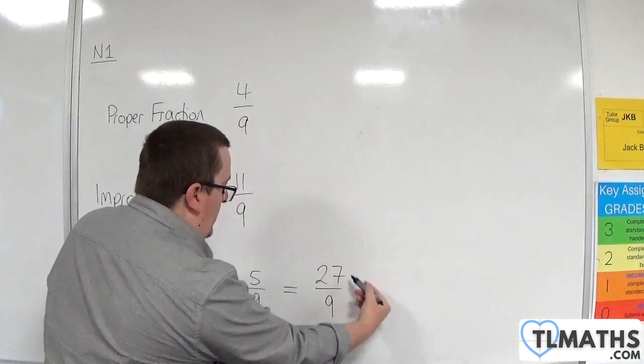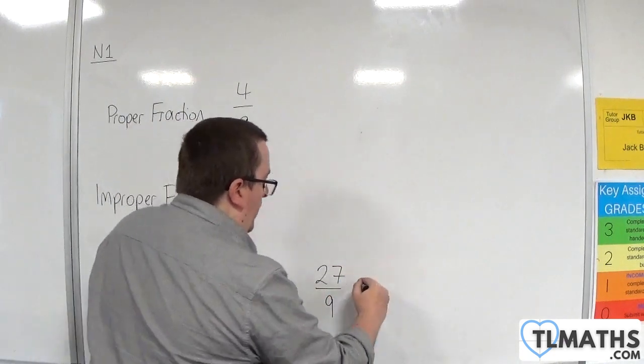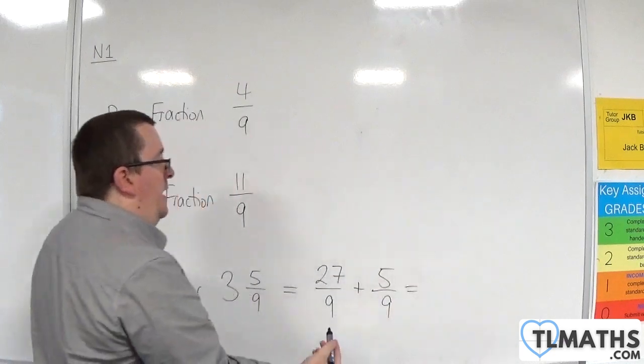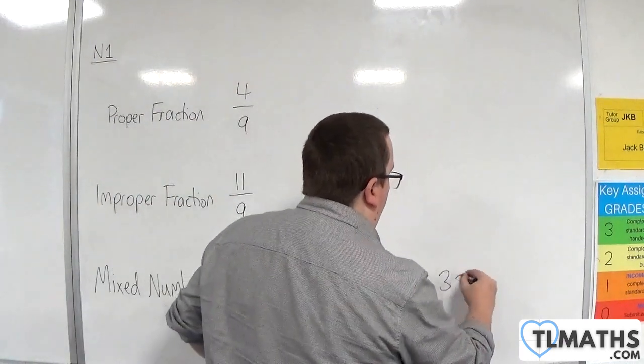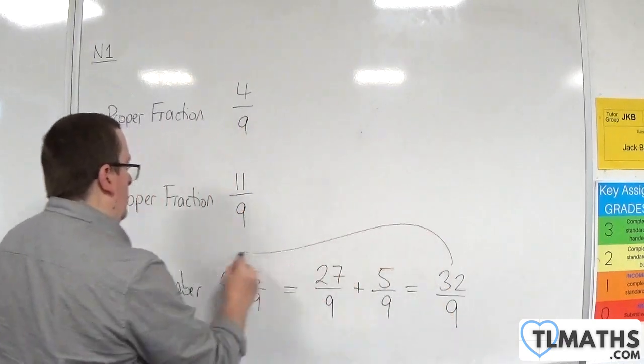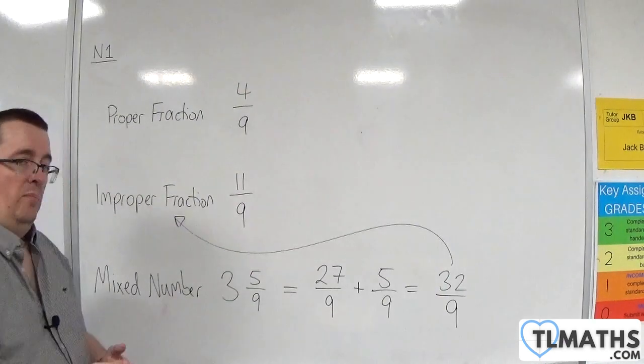That is 3 plus 5 over 9 must make 32 over 9. And so this is now an improper fraction.